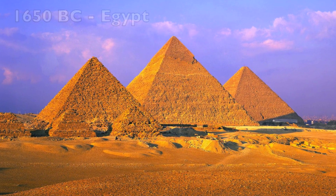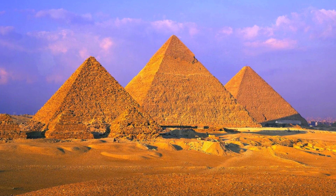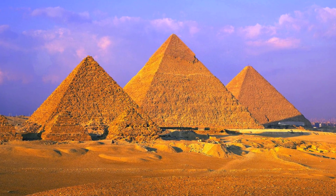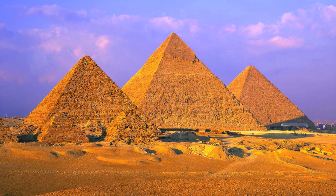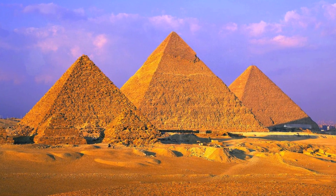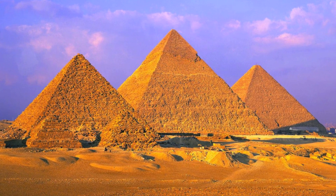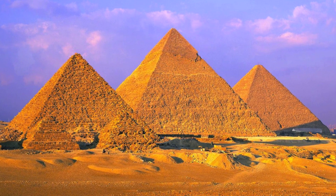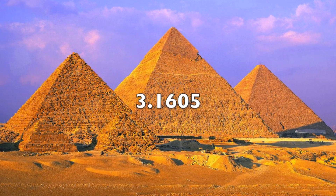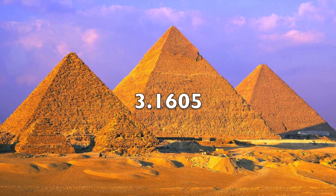In 1650 BC, mathematicians in ancient Egypt calculated the area of a circle through using a formula that gave the value of Pi to be approximately 3.1605.